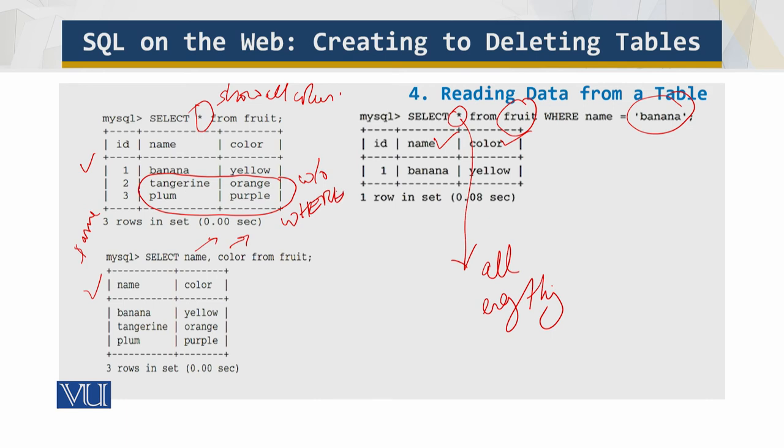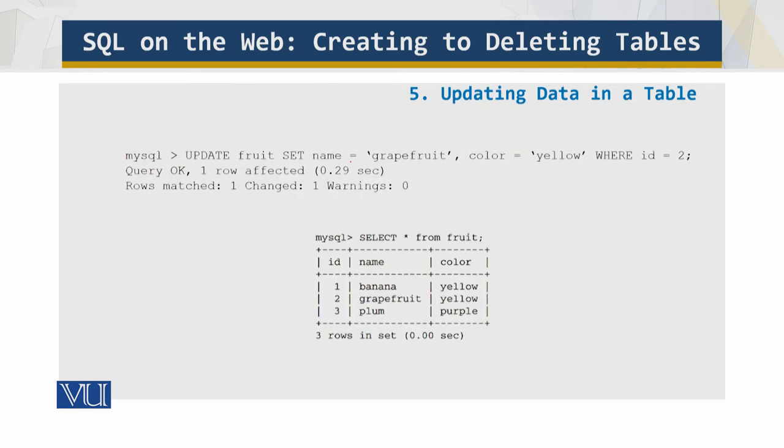Now we need to update the data in a table. How do we update this? We use the UPDATE command. This is the update command. We set the value, this is another reserved word, and we say that the name is grapefruit, color is yellow, ID is 2.